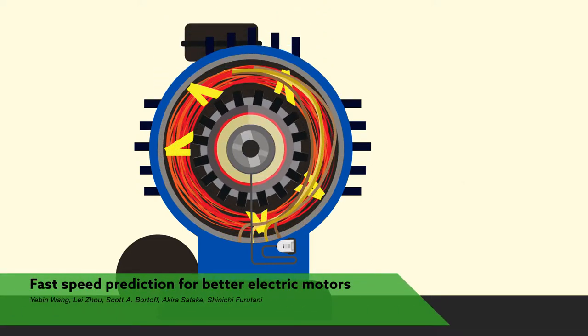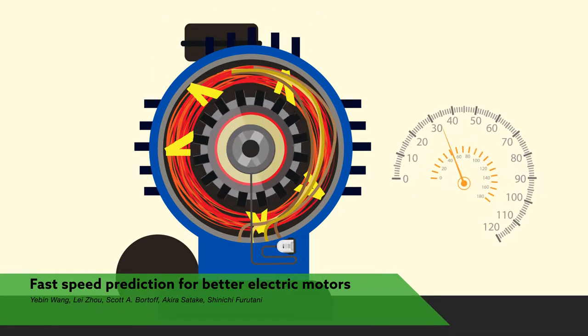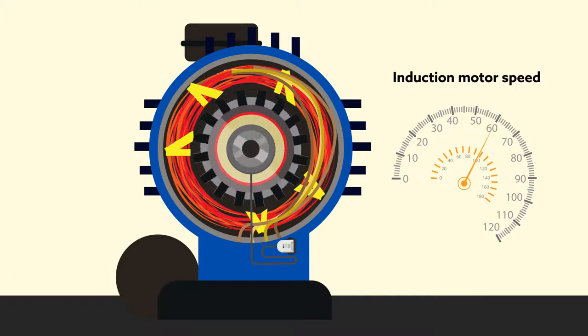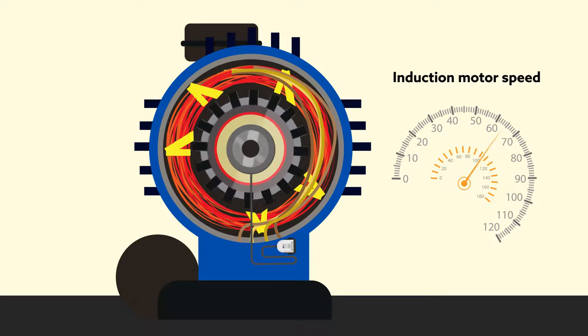Researchers from Japan and Massachusetts have devised a new way to estimate induction motor speed. Typically difficult to achieve for an object constantly in motion, that ability could lead to the construction of more efficient electric motors.